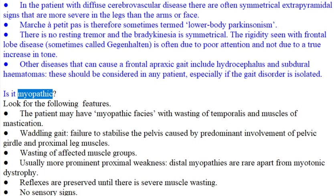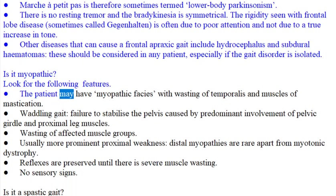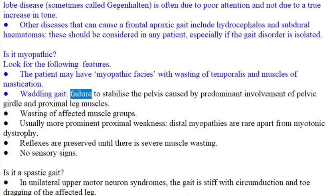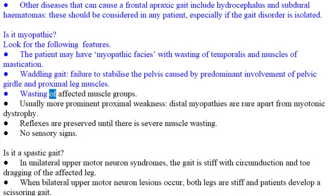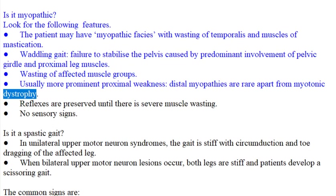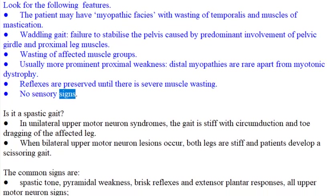Is it myopathic? Look for the following features. The patient may have myopathic facies with wasting of temporalis and muscles of mastication. Waddling gait: failure to stabilize the pelvis caused by predominant involvement of pelvic girdle and proximal leg muscles. Wasting of affected muscle groups. Usually more prominent proximal weakness; distal myopathies are rare apart from myotonic dystrophy. Reflexes are preserved until there is severe muscle wasting. No sensory signs.